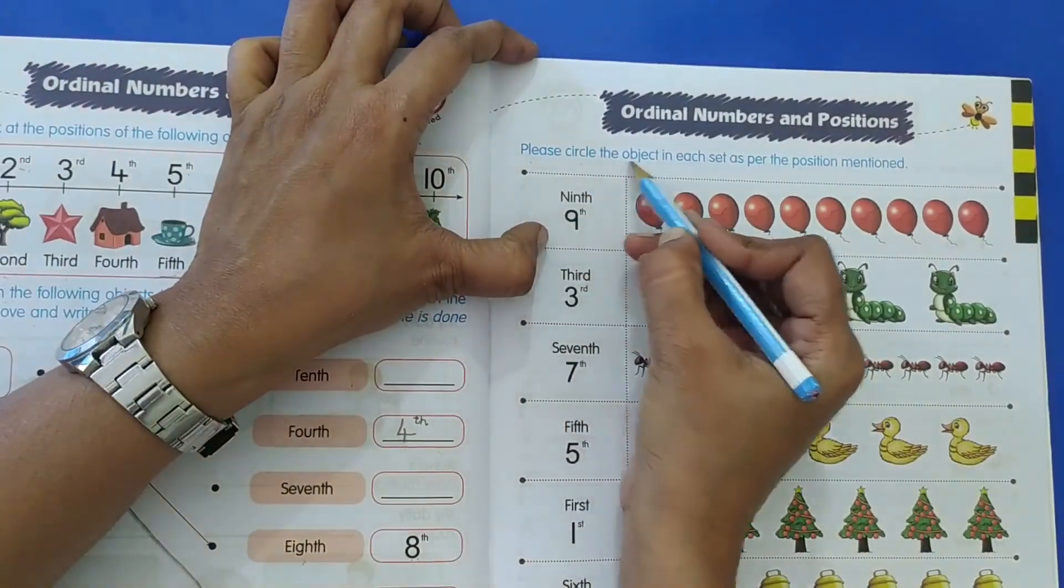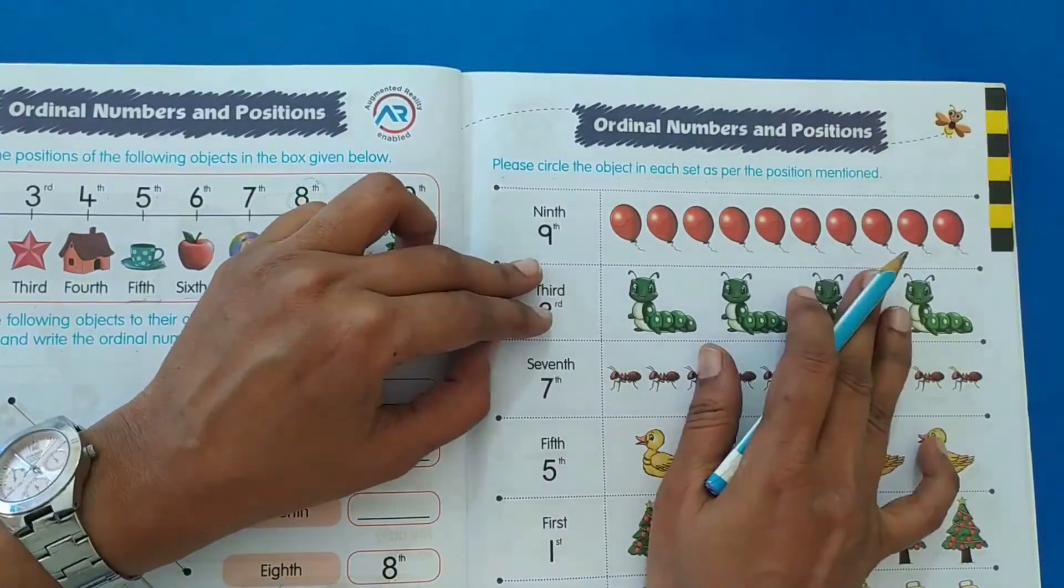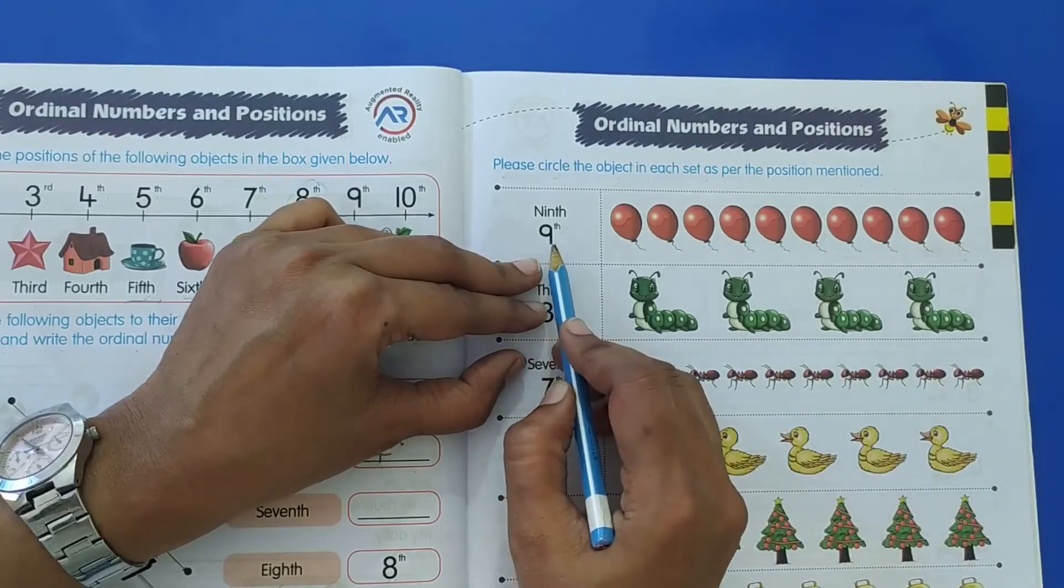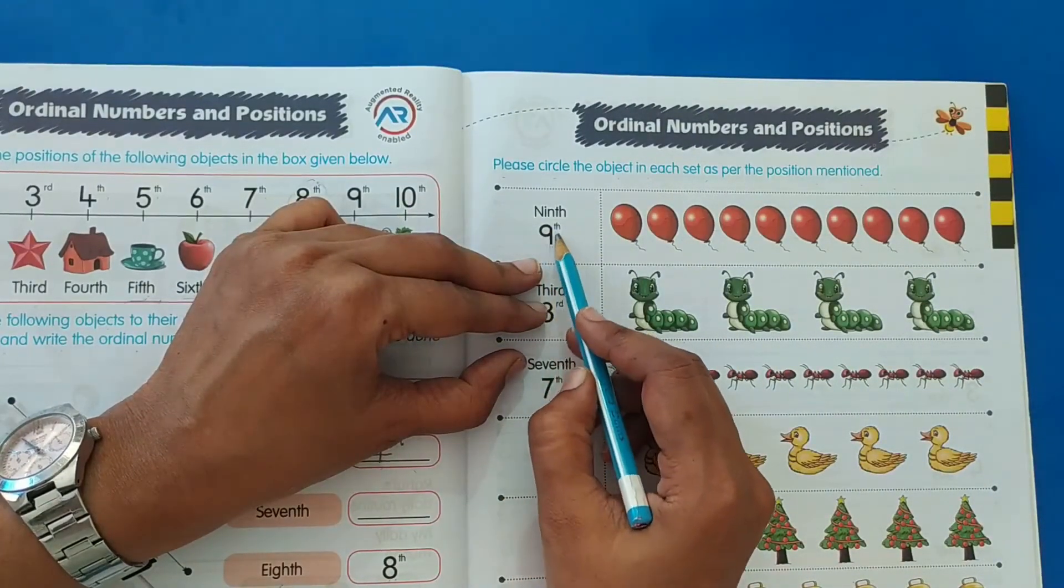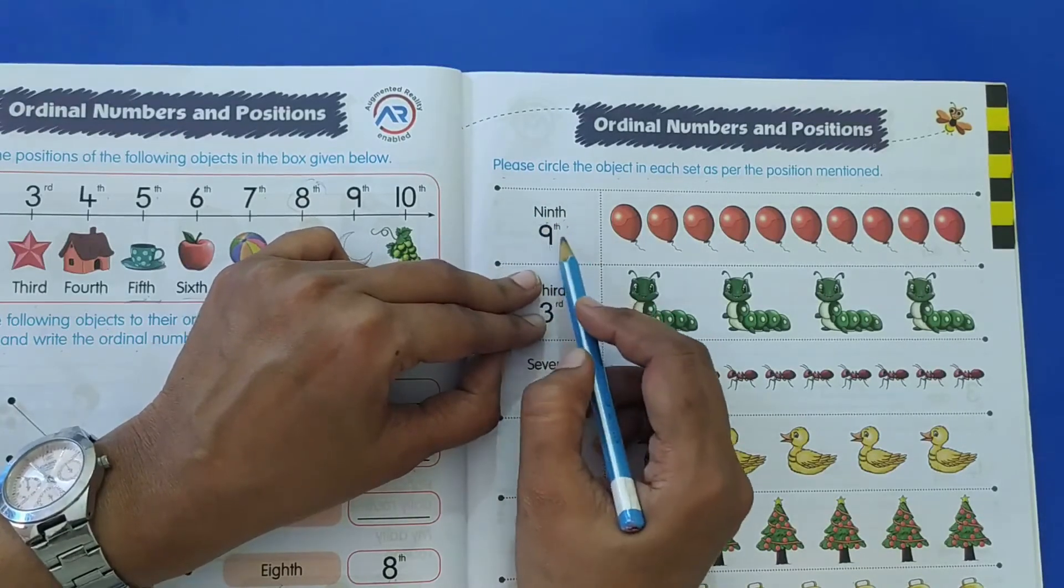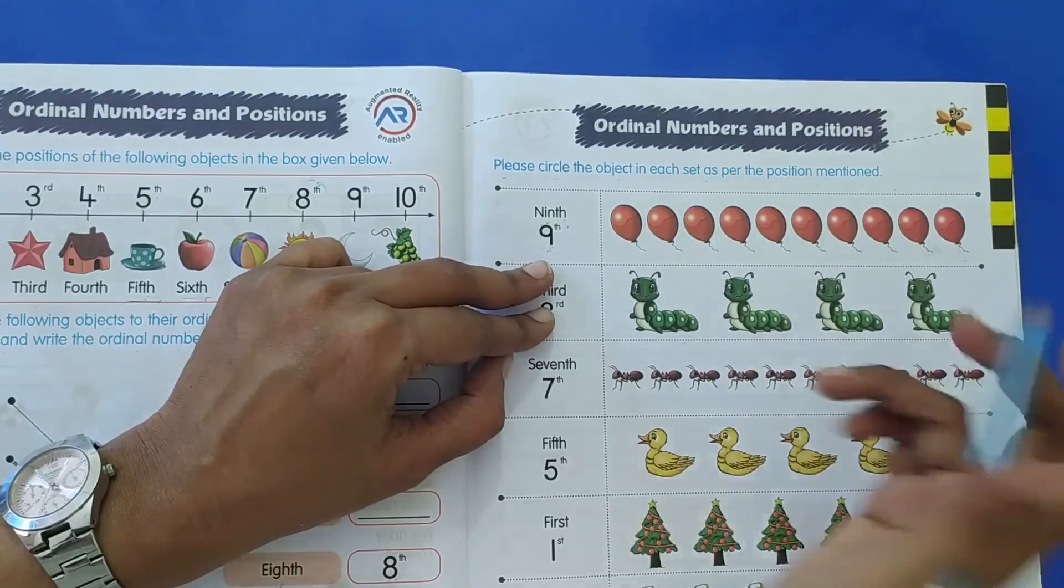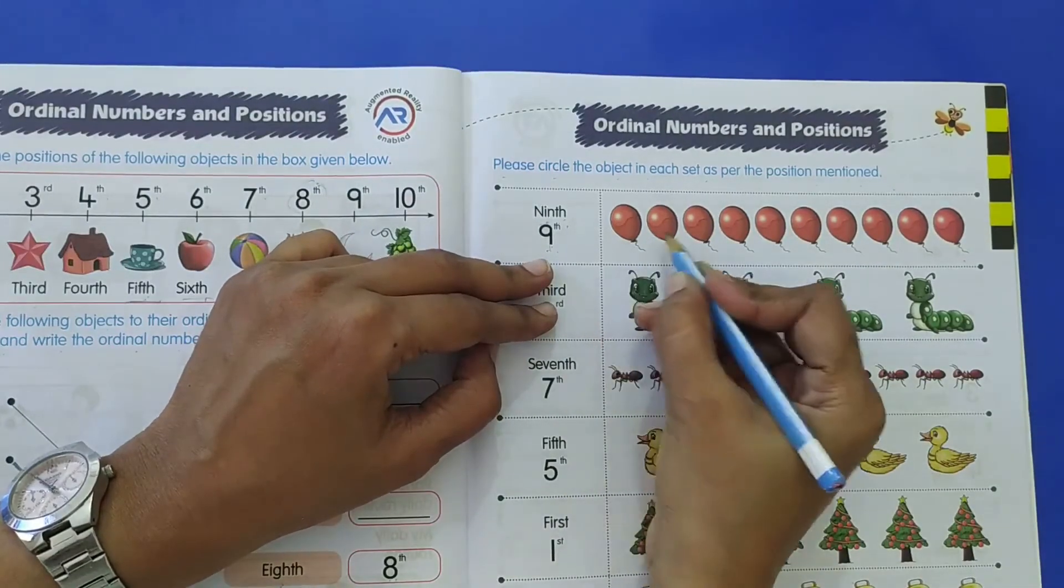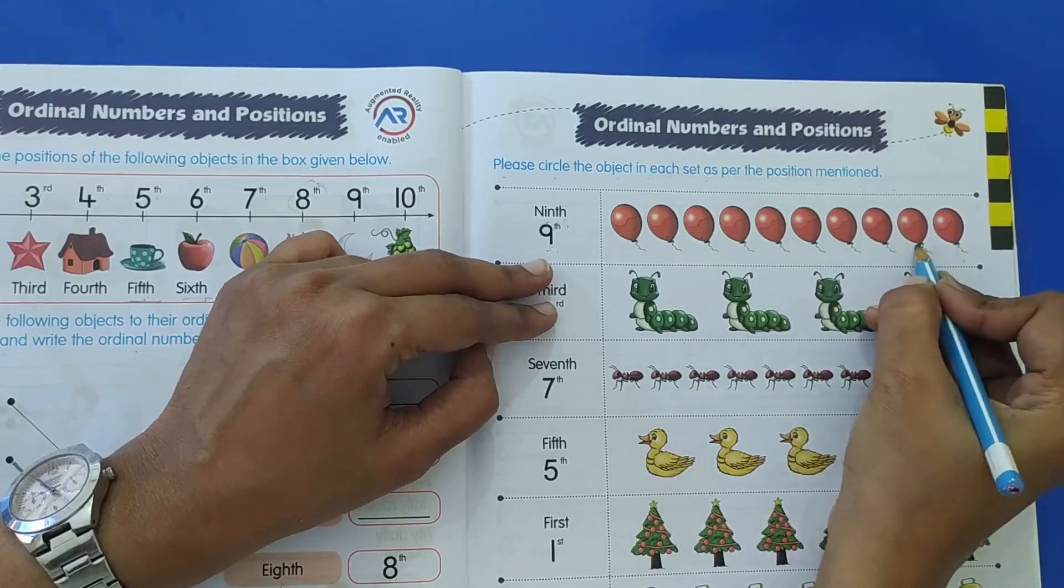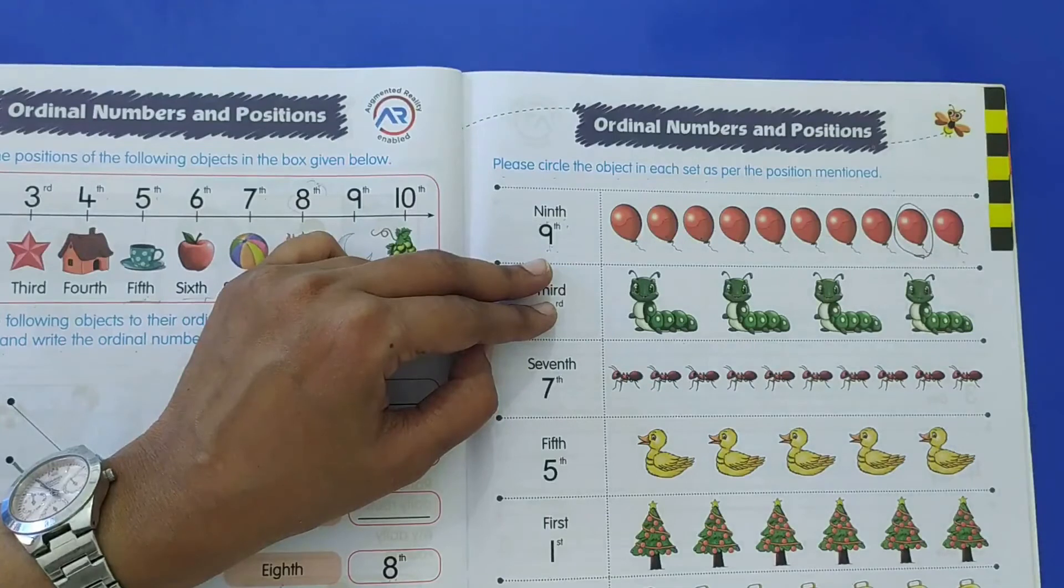Please circle the object in each set as per the position mentioned. Now what you have to do, here there are some balloons and here there is a number, what is the number? It is 9th, N-I-N-T-H. Now this is not the spelling of 9, it is the spelling of 9th, that is the ordinal position number name. So you have to circle the 9th balloon. Let's count: 1, 2, 3, 4, 5, 6, 7, 8, 9. So this balloon is at the 9th position, so I will circle this balloon.